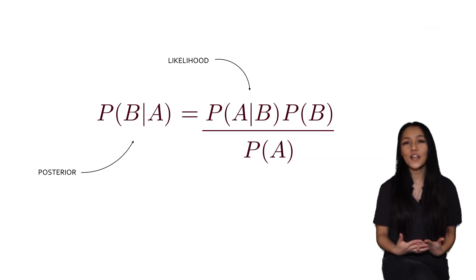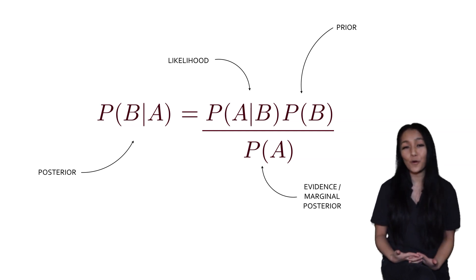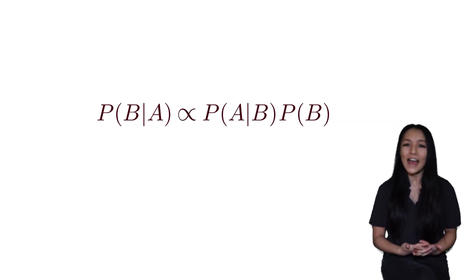Before that, we also have the prior. The prior encodes the domain expertise, the information that we have about the parameter before we've even collected any data. The denominator is the evidence or sometimes also called the marginal posterior, because we marginalize or in other words integrate out all the possible values of the parameter B for the prior times the likelihood. This ensures that our probabilities sum to one. It's a normalization term and generally we don't care about it unless we're doing model comparisons. So generally we can write our Bayes' theorem as a proportionality.